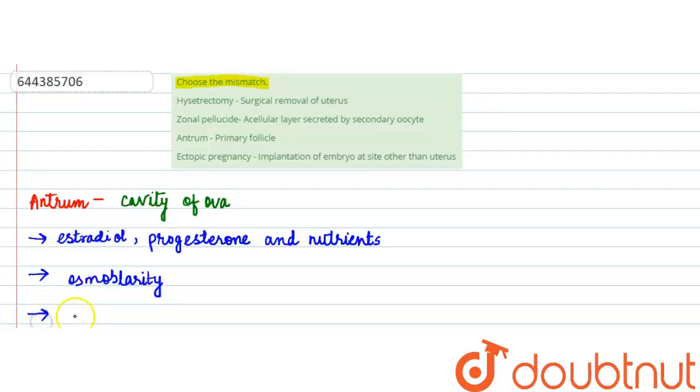And if we talk about the last function which is very important, it is that when there is fertilization happening, there is the fluid in this antrum which takes the released oocyte to the fallopian tube so as to facilitate the fertilization to occur. We know that fertilization occurs in the fallopian tube and the egg released, the mature oocyte released, needs to be received by the fallopian tube.